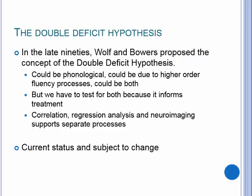In the late 90s, Wolfe and her colleague Bowers proposed the double deficit hypothesis. The link will be available at the end of my slides. She noted this is where we are now and subject to change: dyslexia could be phonologically based, it could be due to higher-order fluency processes, or it could be both. I'd like to talk briefly about the progression that allows us to make these kinds of claims today.